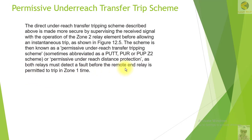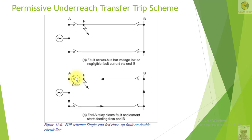In the PUTT scheme, both relays must detect a fault before the remote end relay is permitted to trip in Zone 1 time. For example, a fault occurs, busbar voltage is low, so there is negligible fault current via station B. This is one example of the permissive scheme.